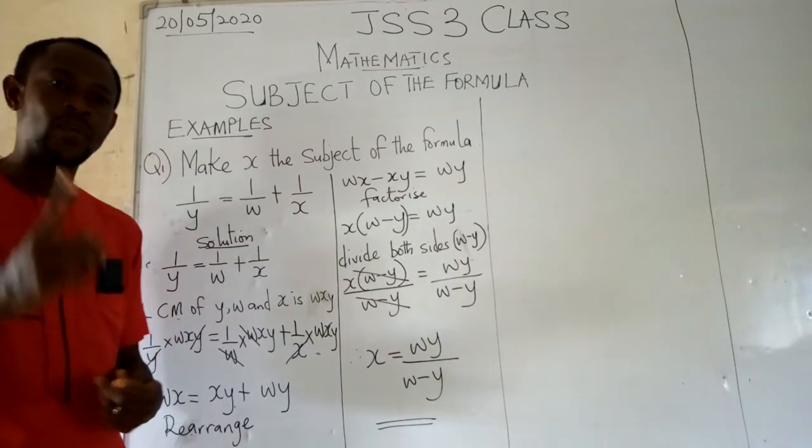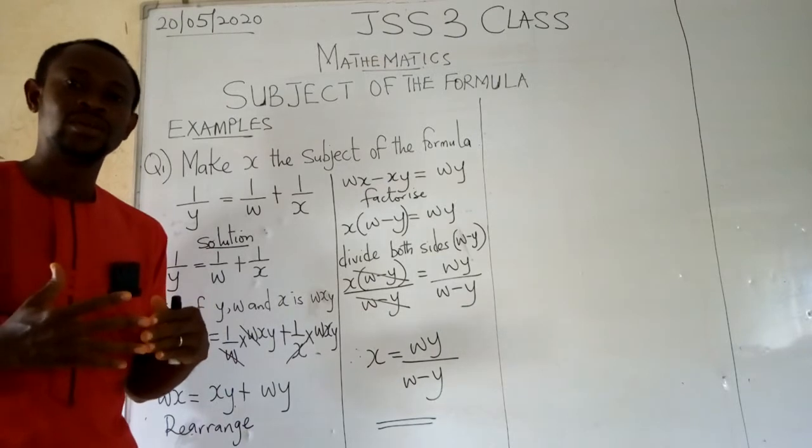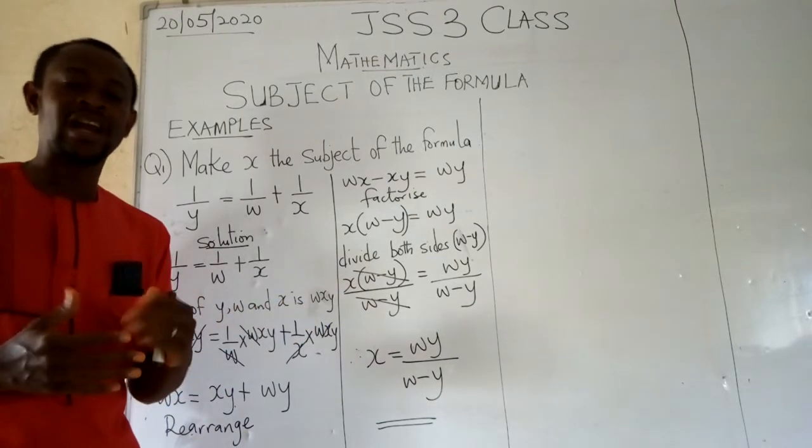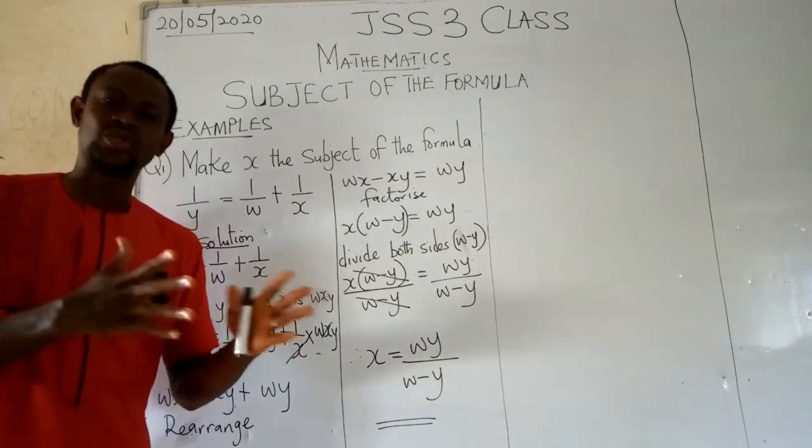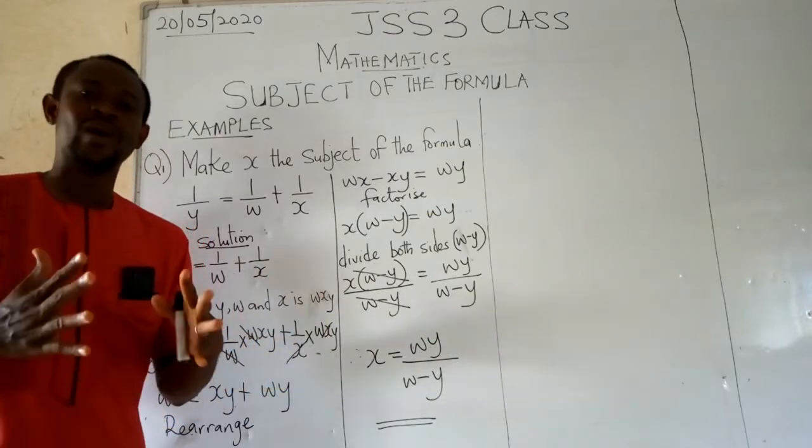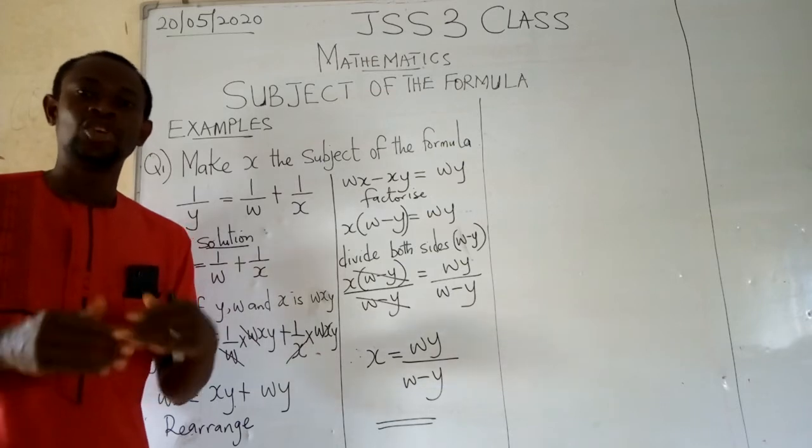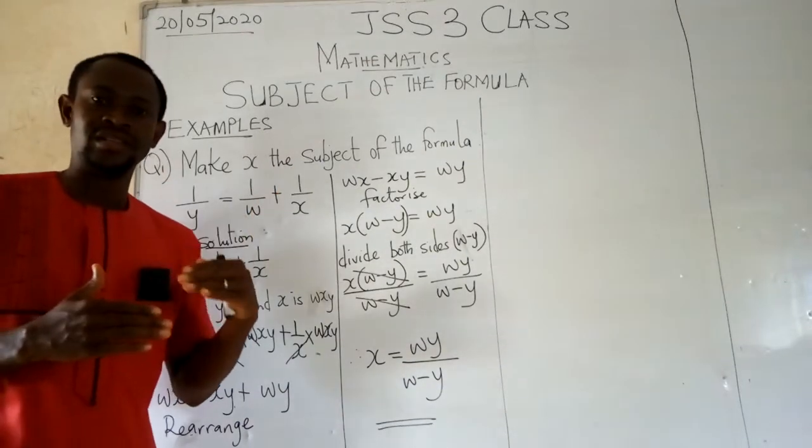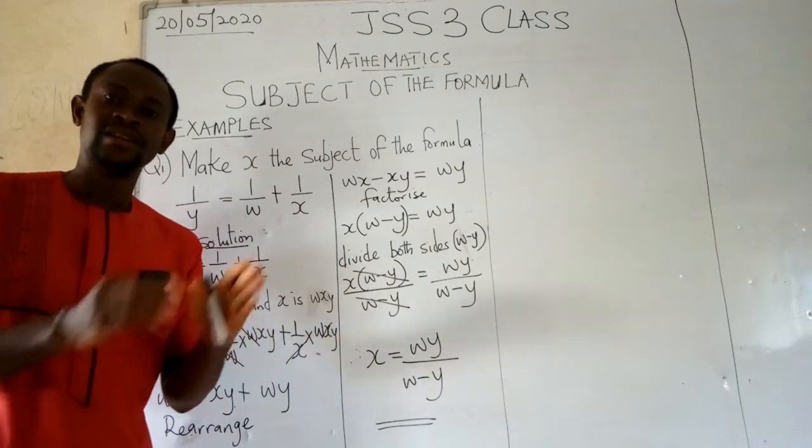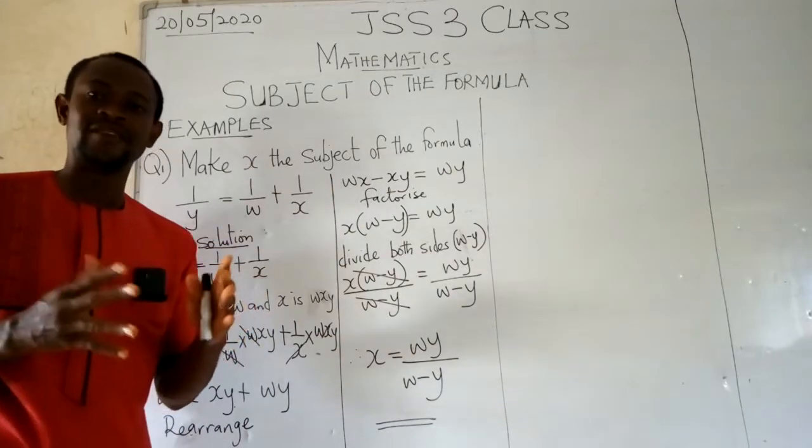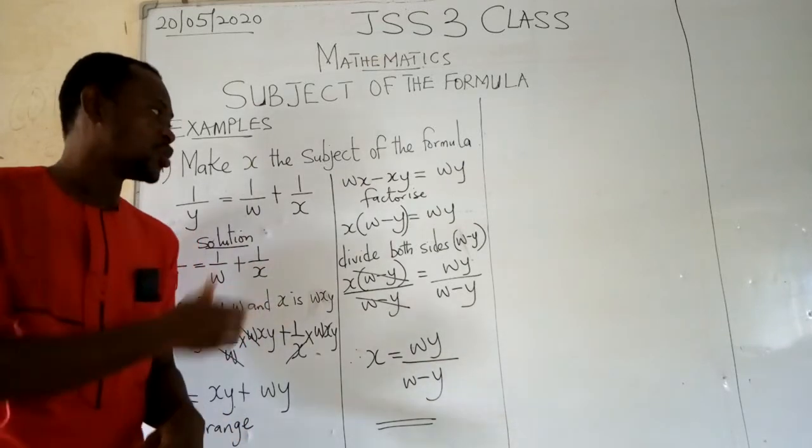For you to achieve that, what do you do? Number one, you check out if there are fractures in your question, try to claim or when you have a square root or square or whatever you have, you try to claim then ensuring that your subject is on one side. After your rearrangement, you ensure it is on one side then after which you can now resolve the question.